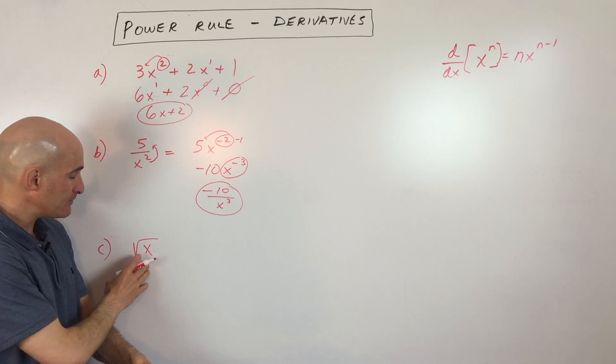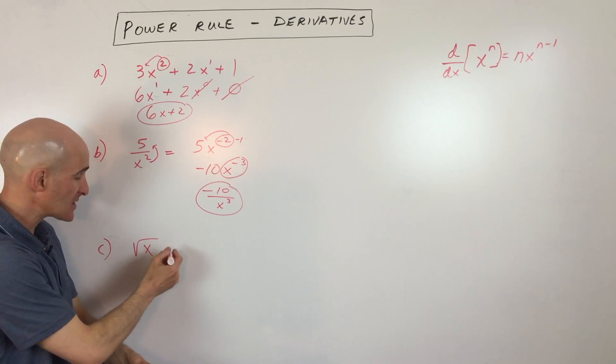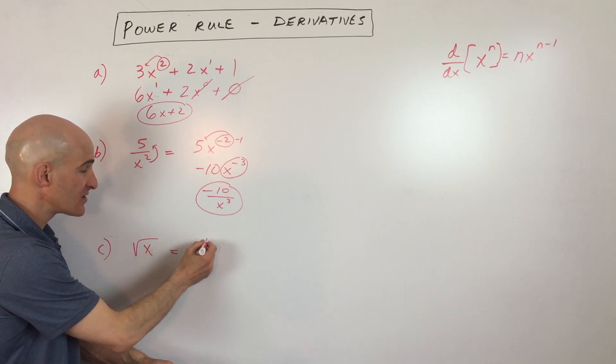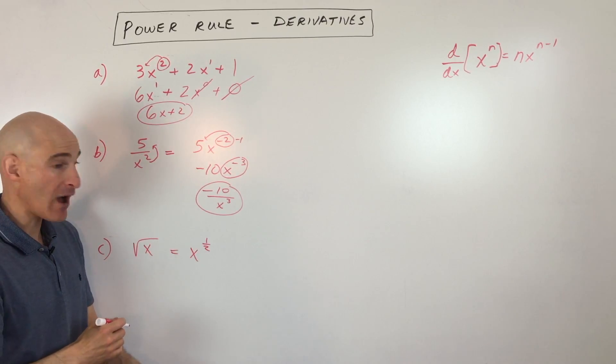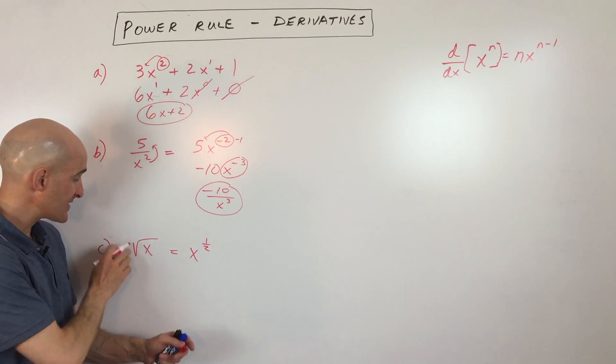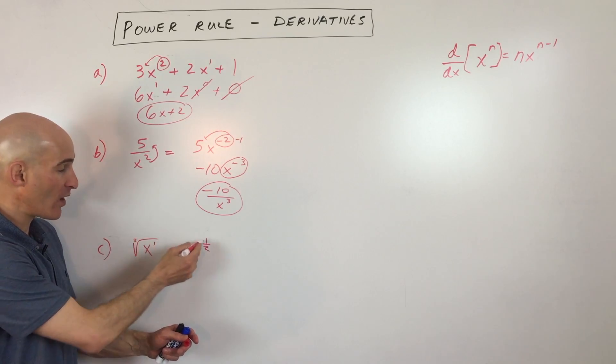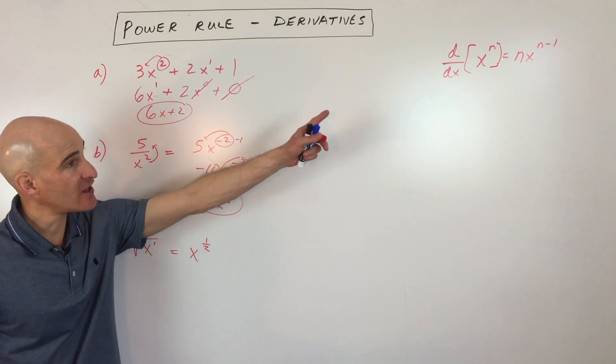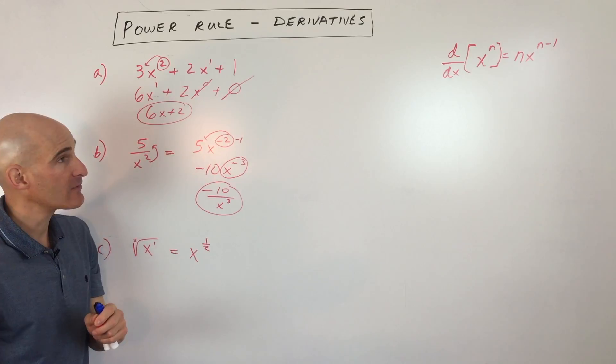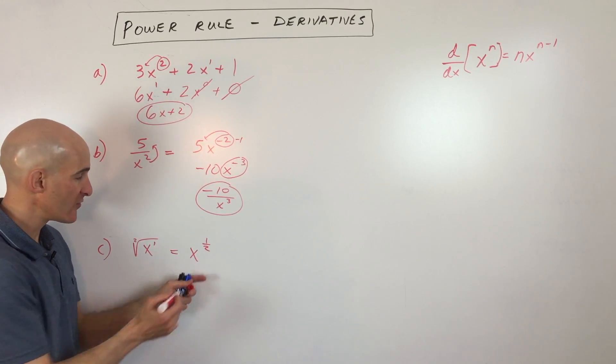And then this last one, here we have square root of x, but again, you can rewrite this as x to the 1 half power. Remember the denominator, that's the root, and the numerator, that's the power. So this is really like x to the 1 half power. So now it fits our power format, and we can use the power rule to take the derivative.